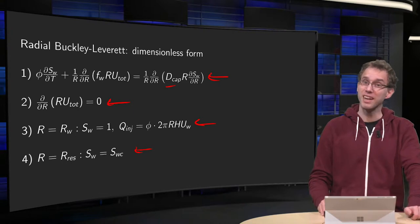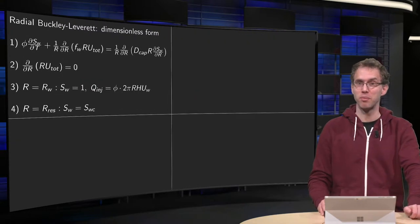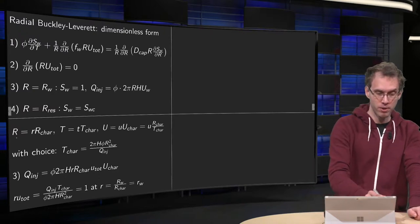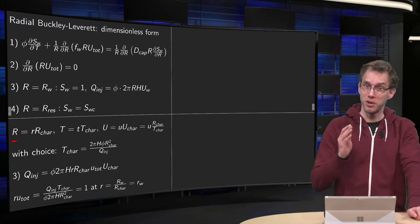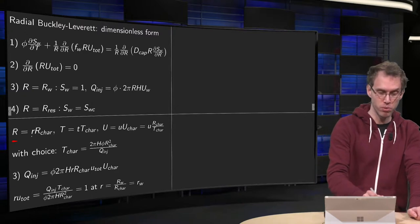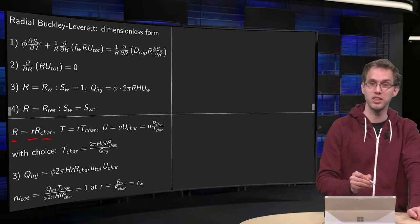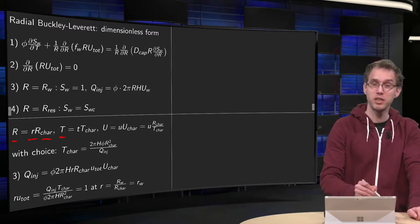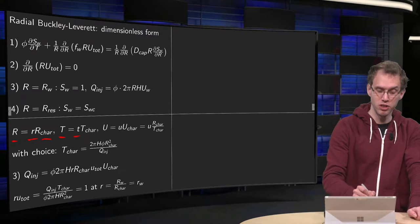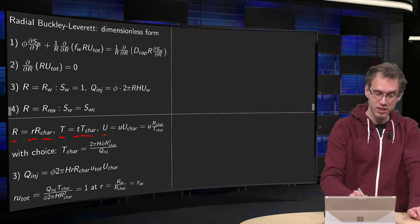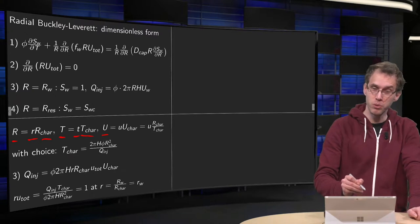Now, how do we rewrite those in dimensionless form? It looks horrible, but it's actually pretty easy. What do you do? Your capital R, your dimensional R becomes a small r, the dimensionless R times your characteristic length. Your dimensional T equals your dimensionless T times your characteristic time. Your capital U, your dimensional velocity becomes your dimensionless velocity times your characteristic.